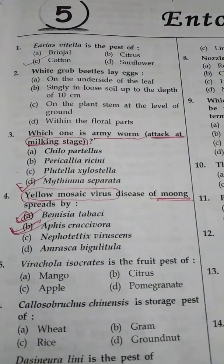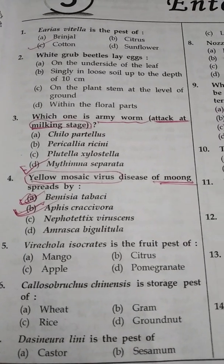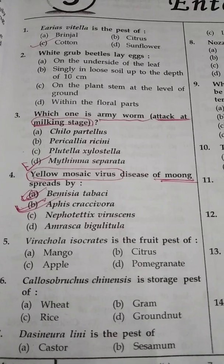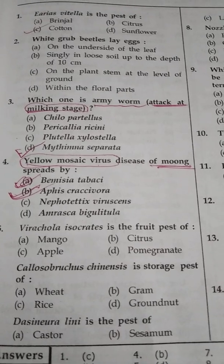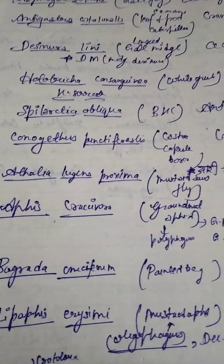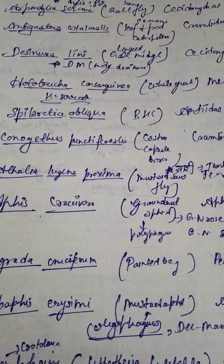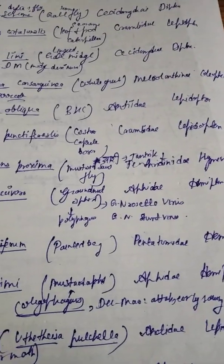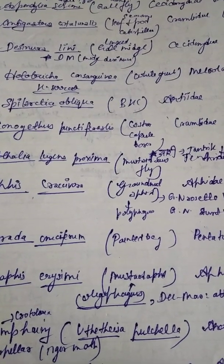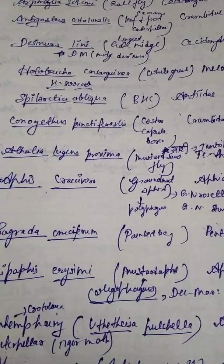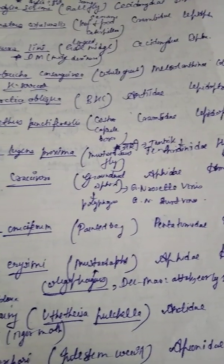Now question number 2: White grub lays egg — option A on the underside of leaf, option B singly in loose soil up to a depth of 10 cm, option C on the plant stem at ground level, option D within the floral parts. The scientific name of white grub is Holotrichia consanguinea or Holotrichia serrata, family Melolonthidae, order Coleoptera. In pest of oilseed, also remember Bihar hairy caterpillar — scientific name Spilarctia obliqua, family Arctiidae, order Lepidoptera.